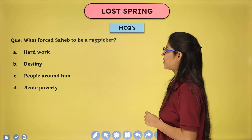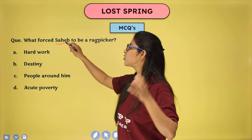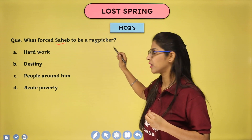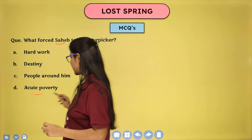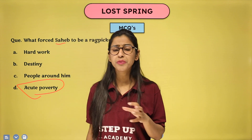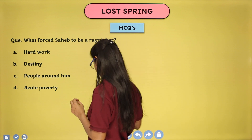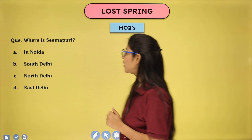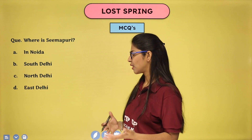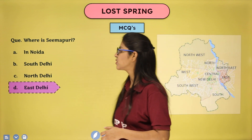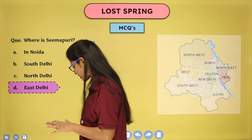What forced Mukesh to pursue rag-picking? Options: hard work, destiny, people around him, or acute poverty. The answer is: acute poverty. Because of extreme poverty, he was forced to pursue rag-picking. Where is Seemapuri? It is on the east side of Delhi, on the outskirts — the entire slum area known as Seemapuri.